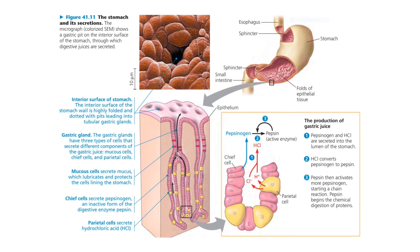The diagram indicates how active pepsin is formed. Pepsinogen, H+ ions, and Cl- ions are secreted into the lumen of the stomach. The hydrogen and chloride ions combine to form HCl, and HCl then converts some pepsinogen into pepsin. Pepsin itself then helps activate more pepsinogen, starting a chain reaction. Pepsin begins the chemical digestion of proteins.